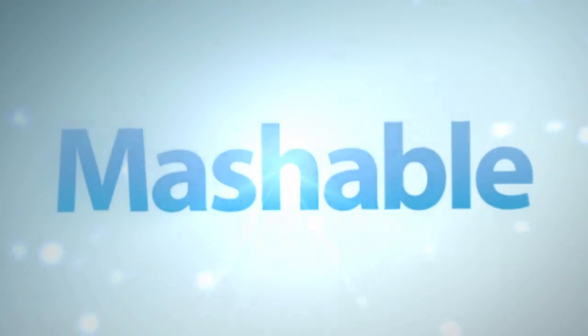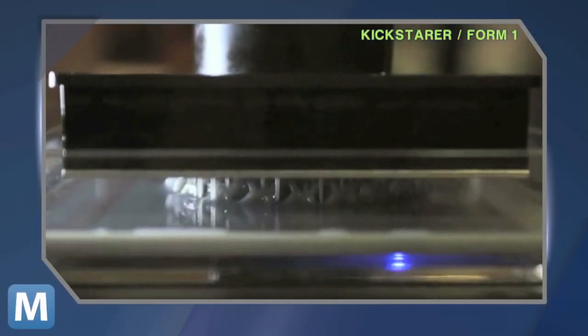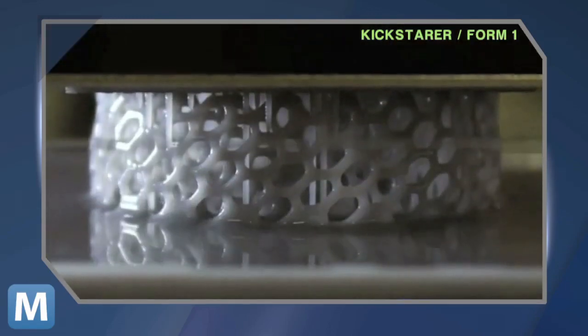Typically, printers use fused deposition in which a nozzle dispenses printer material. But the Form 1 uses stereo lithography. A laser prints the model from a pool of liquid plastic resin, which cures layer by layer at a much higher resolution than traditional nozzle printers.